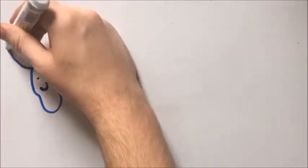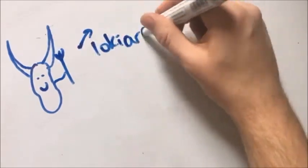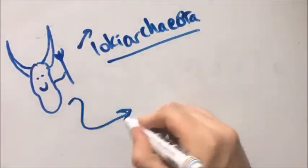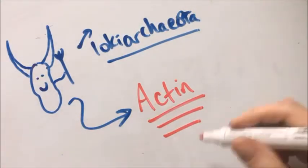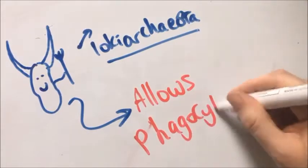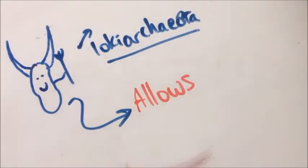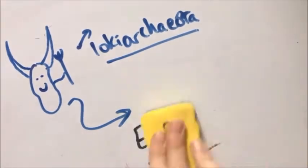Loki Archaeota were an important find due to their possession of actin. Actin is integral to the process of phagocytosis in eukaryotes, and its presence in archaea suggests an early capacity for engulfing, which would then facilitate endosymbiosis.